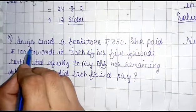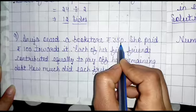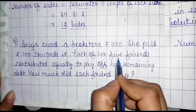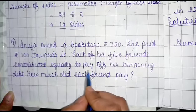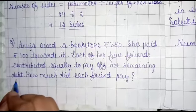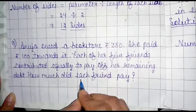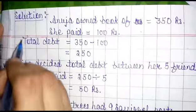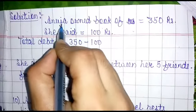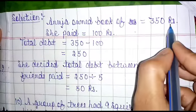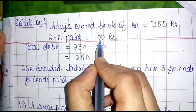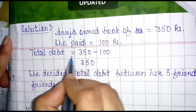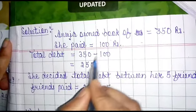Anuja owes a bookstore Rs. 350 and pays Rs. 100 towards it. So the total remaining debt to be paid by friends is equal to Rs. 500 — that is, the total debt between her five friends.